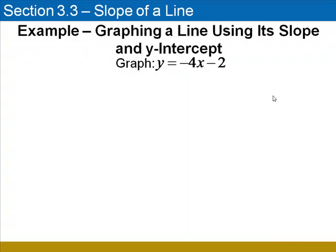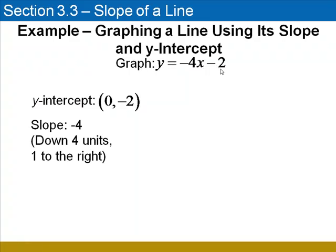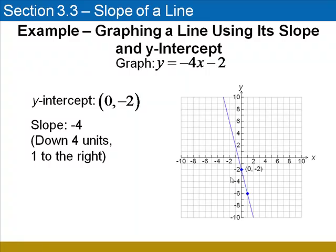We're going to graph the line y equals negative 4x minus 2. We know that the y-intercept is (0, negative 2) — the constant term on the right side tells us the y-coordinate of the y-intercept. The slope of this line is negative 4, the coefficient of the x-term. A slope of negative 4 tells us that the line moves down 4 units for every one unit to the right. We plot the y-intercept at (0, negative 2), count down 4 units and 1 to the right, then draw the line that passes through those two points.